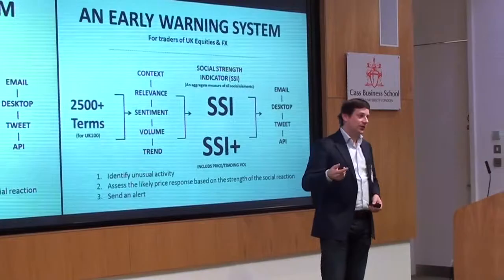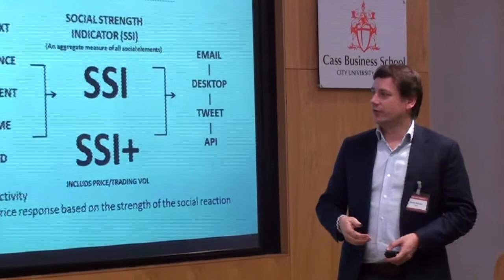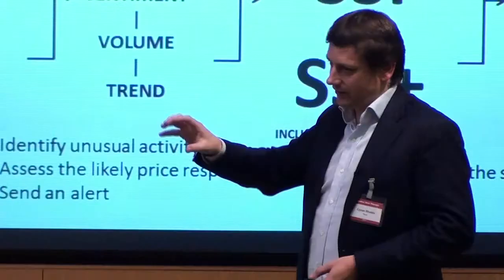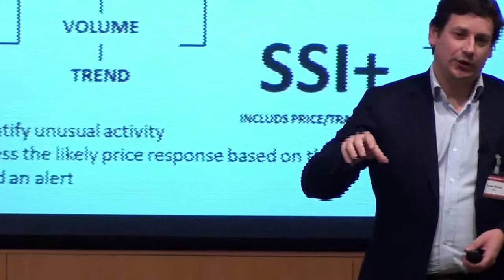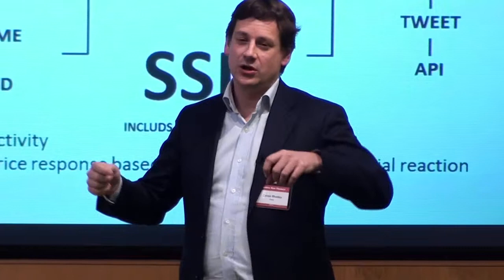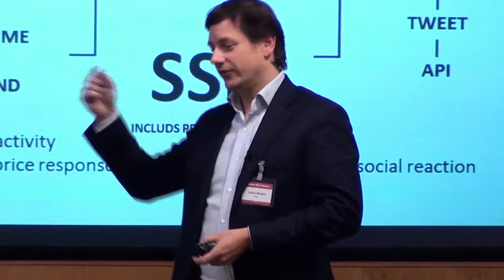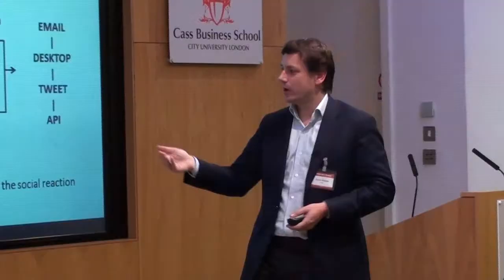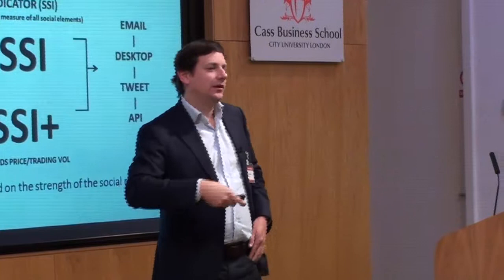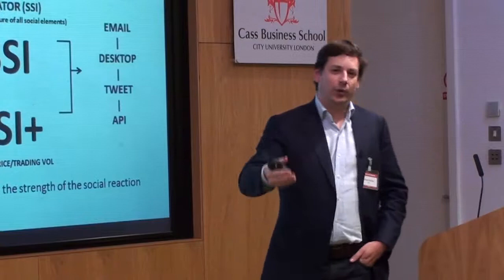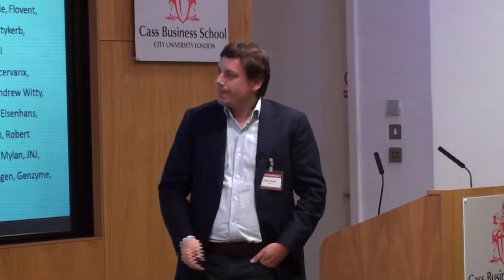Out of all that, we generate an indicator we call SSI. Anyone who's traded will be familiar with RSI, and SSI is our version of that — a social strength indicator. SSI itself is just social data; SSI plus includes trading volume and price as well. That way you get two directions: we're looking for unusual activity in social data and then looking for changes in price, or you have big changes in price and you're looking to explain it. When there are unusual activities — something happening, say an oil rig is mentioned — we're emailing you because the volume and sentiment went out of normal bounds, highlighting that something has happened.